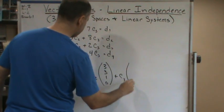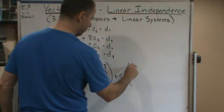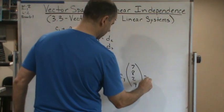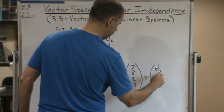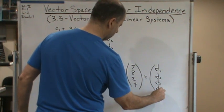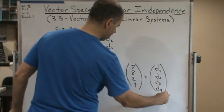Plus c3 times what? 7, 8, 2, 4, equals d1, d2, d3, d4, right?